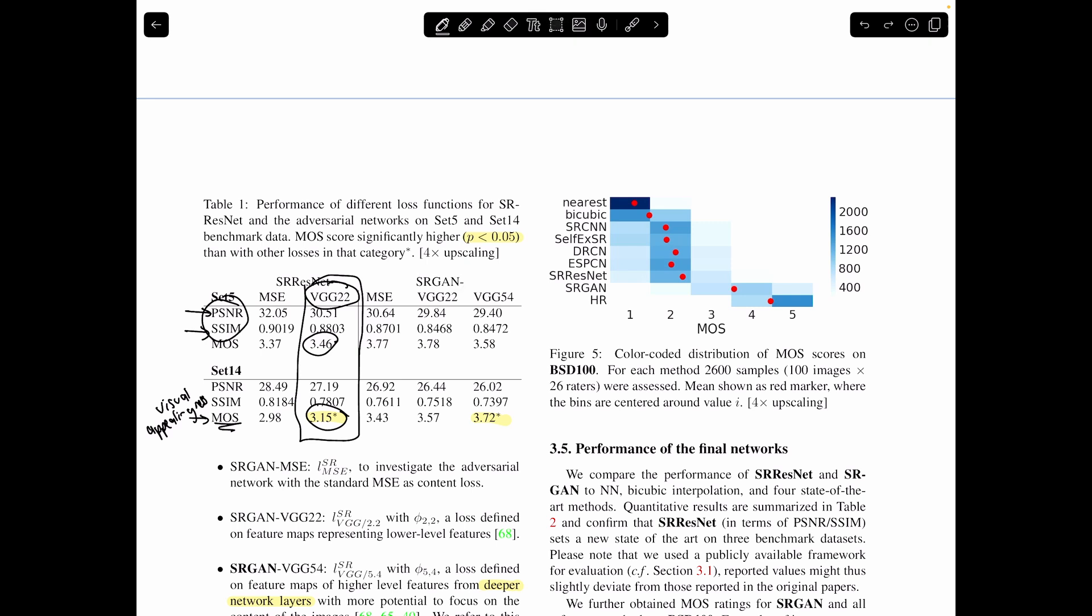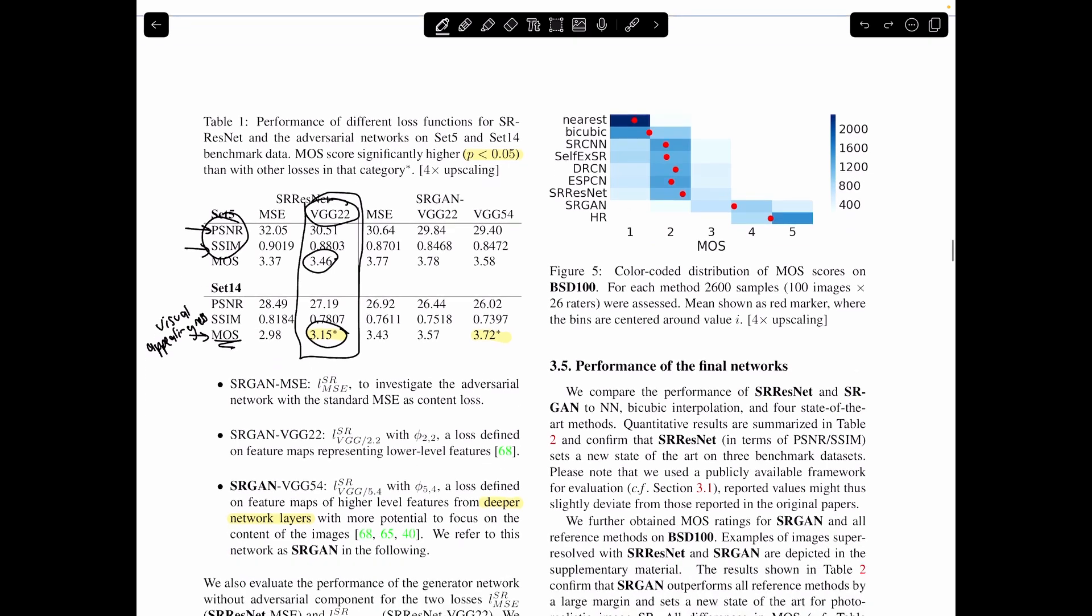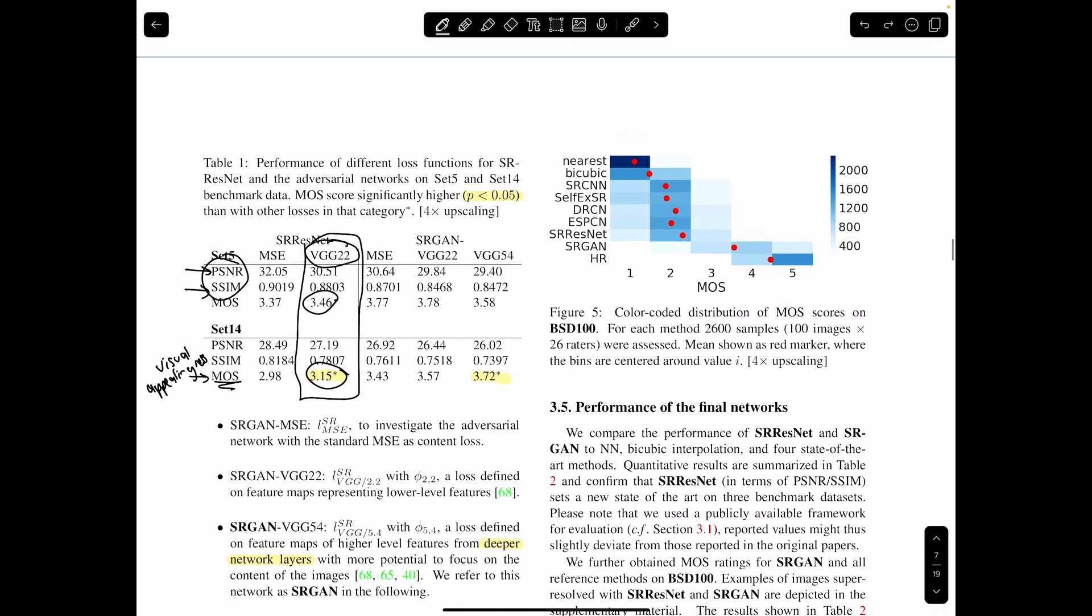And so you can see that the perceptual loss does much better on this mean opinion score. Same thing with the SRGAN. And then something interesting is that they also test two different types of VGG losses. So they're going to test a loss from the VGG network of a lower level features, and then this 54 one is going to be a higher level feature, more abstract, more perceptual. So that's going to outperform the lower level perceptual loss and then the mean squared error loss.